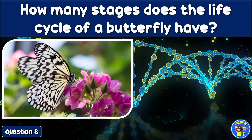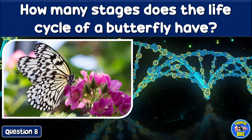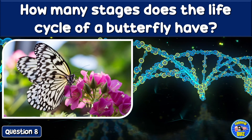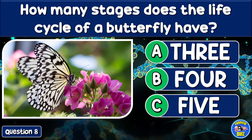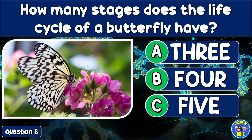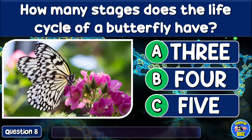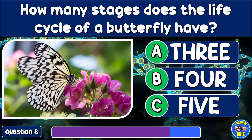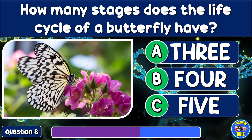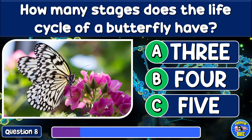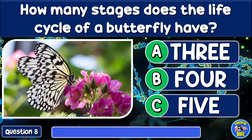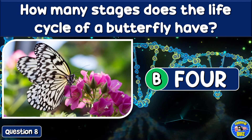How many stages does the life cycle of a butterfly have? Three, four, or five? Four.